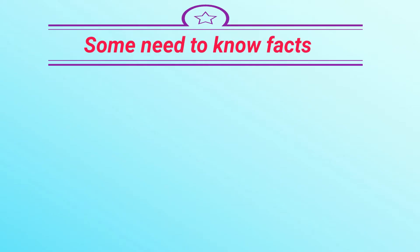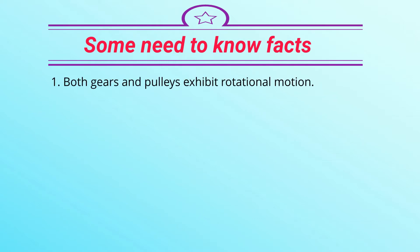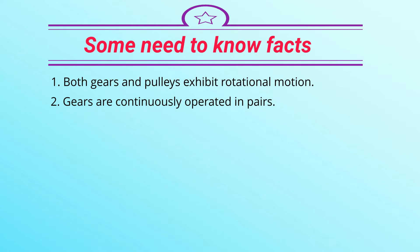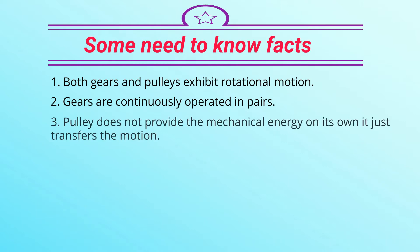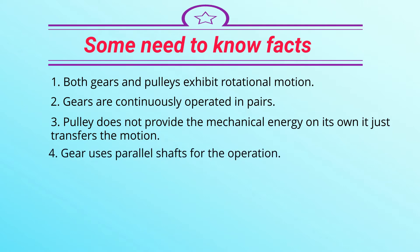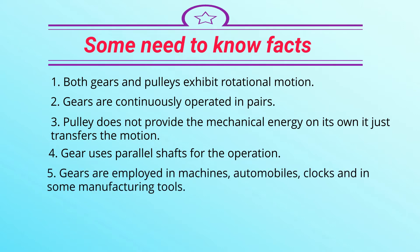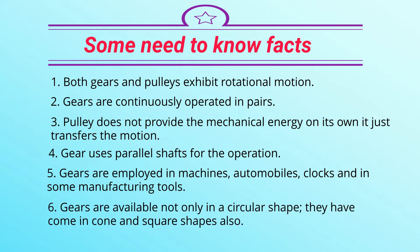Some need-to-know facts: Both gears and pulleys exhibit rotational motion. Gears are continuously operated in pairs. A pulley does not provide mechanical energy on its own — it just transfers motion. Gears use parallel shafts for operation and are employed in machines, automobiles, clocks, and some manufacturing tools. Gears are available not only in a circular shape but also come in cone and square shapes.